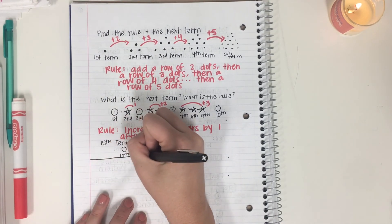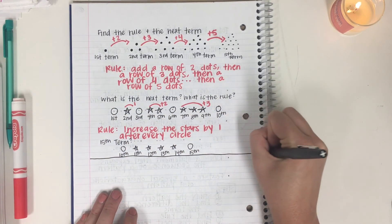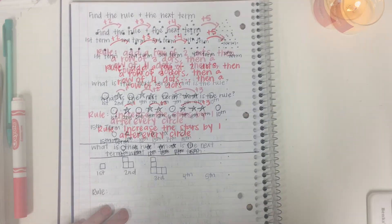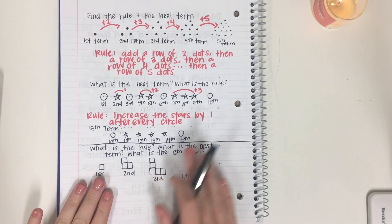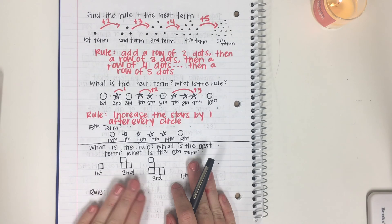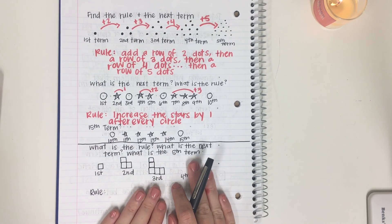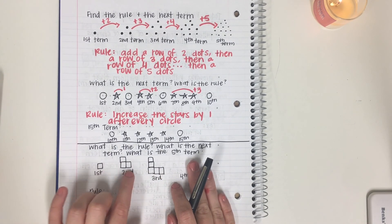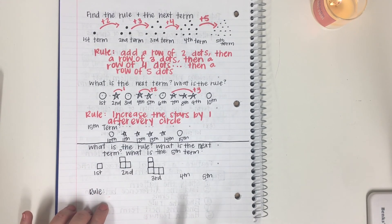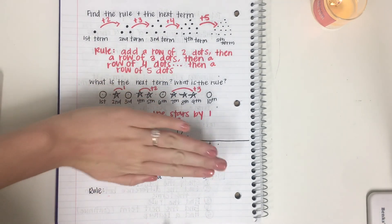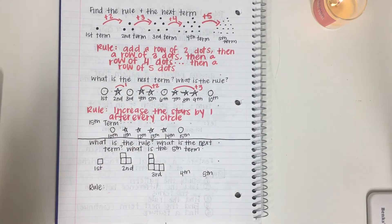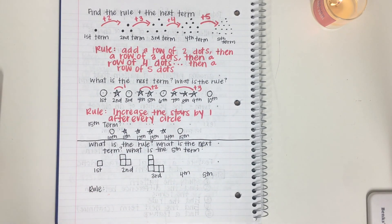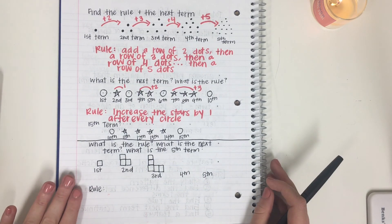I'm going to give you one pattern tonight to work on on your own. Look at the problem for tonight — study the pattern and figure out what is happening from the first to the second to the third term. That will give you your rule. Then find the fourth and fifth term. Remember, when coming up with the rule, your friend should be able to draw out the pattern just from your words. Bring that in for tomorrow.